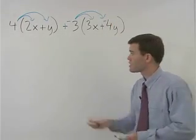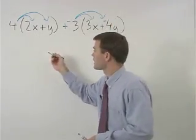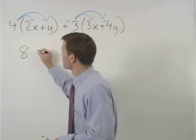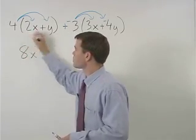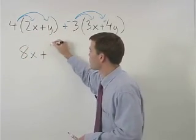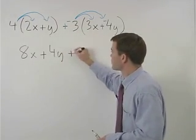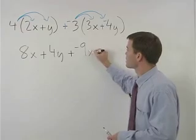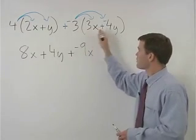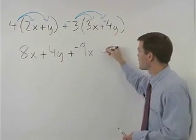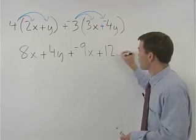That gives us 4 times 2x or 8x plus 4 times y or 4y plus negative 3 times 3x which is plus negative 9x plus negative 3 times negative 4y which is plus 12y.